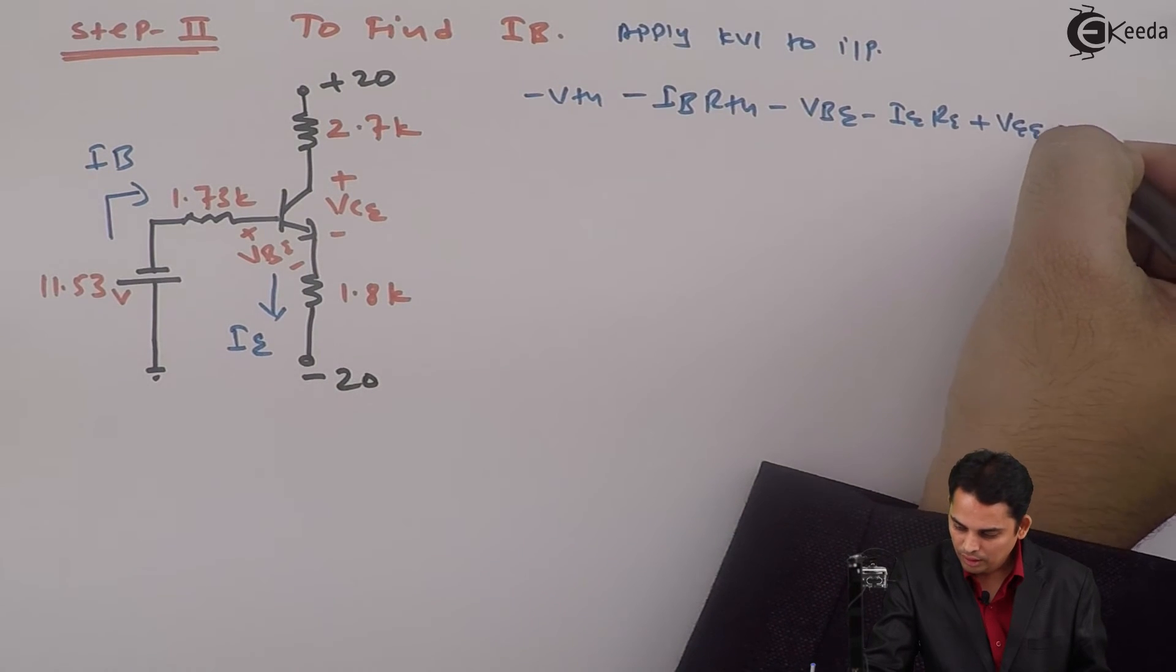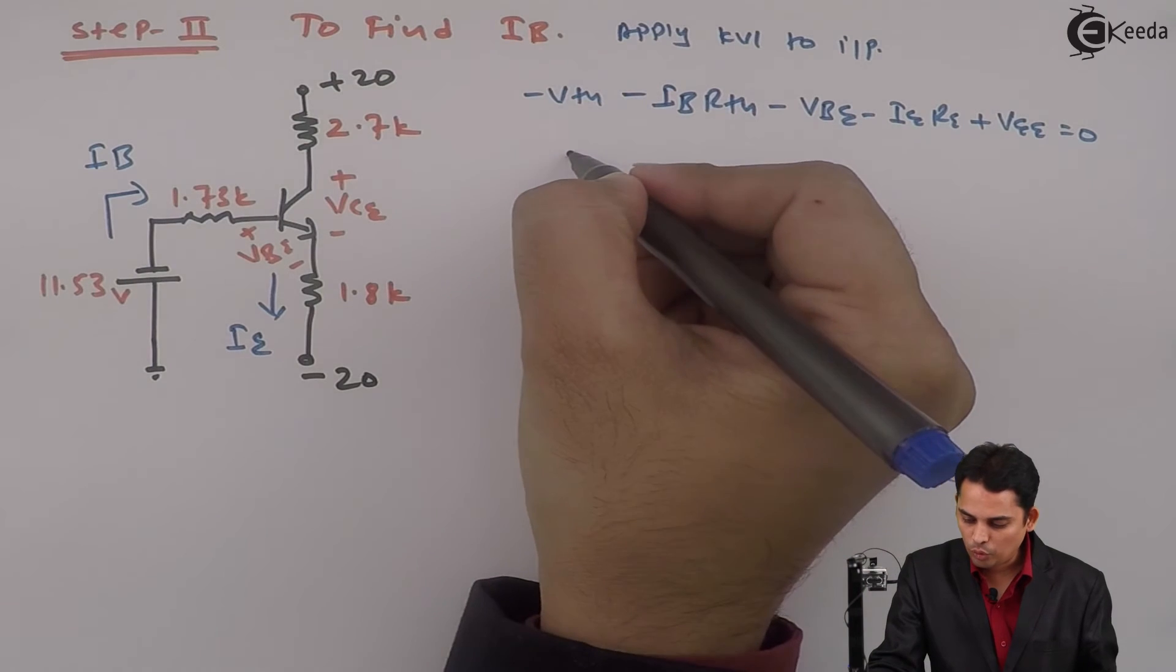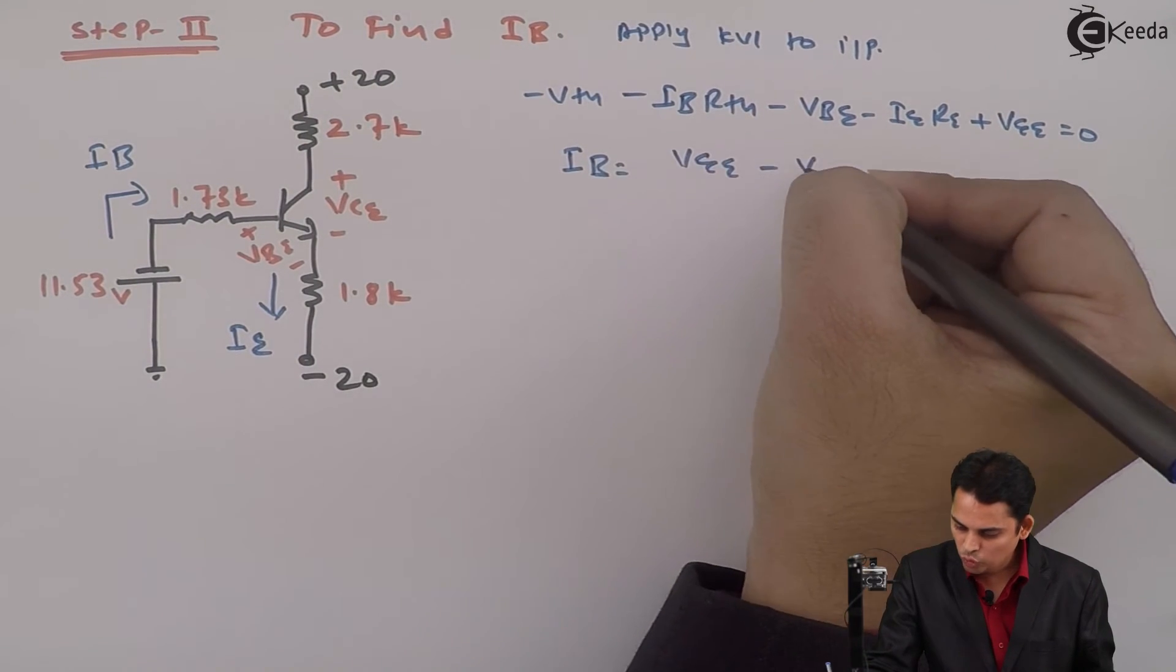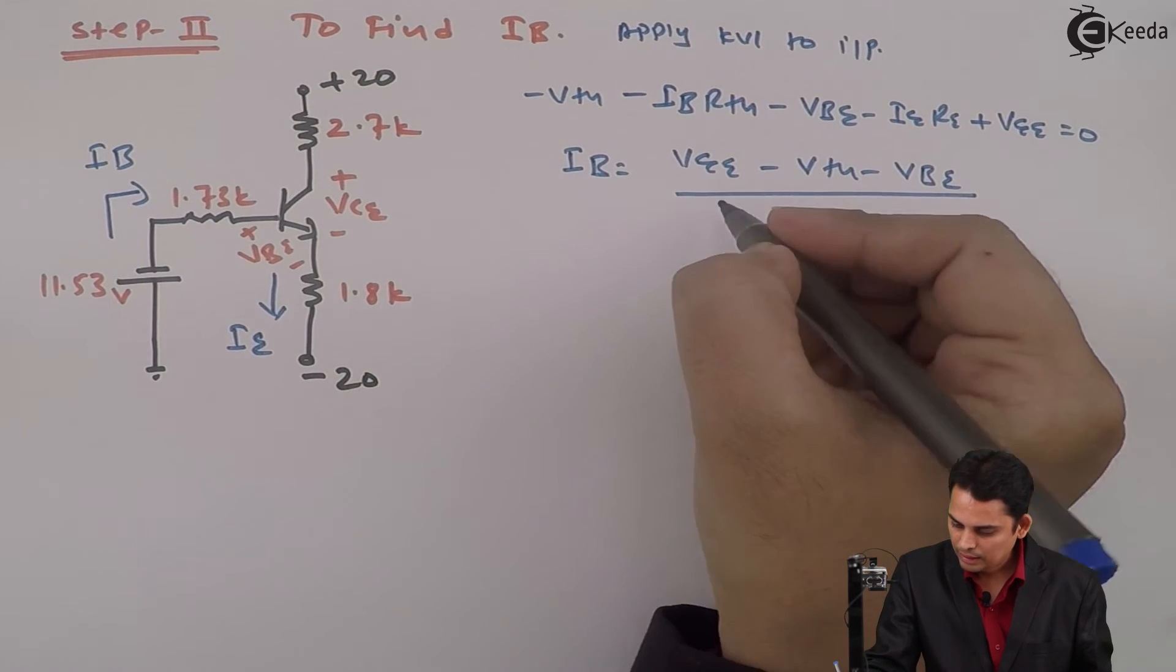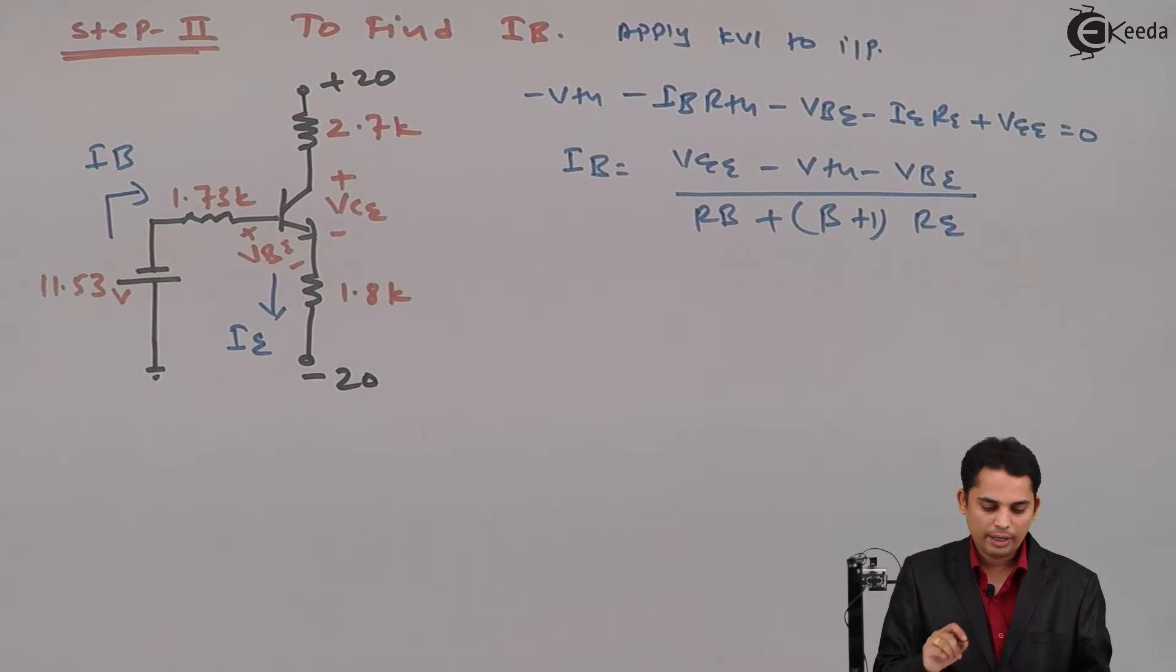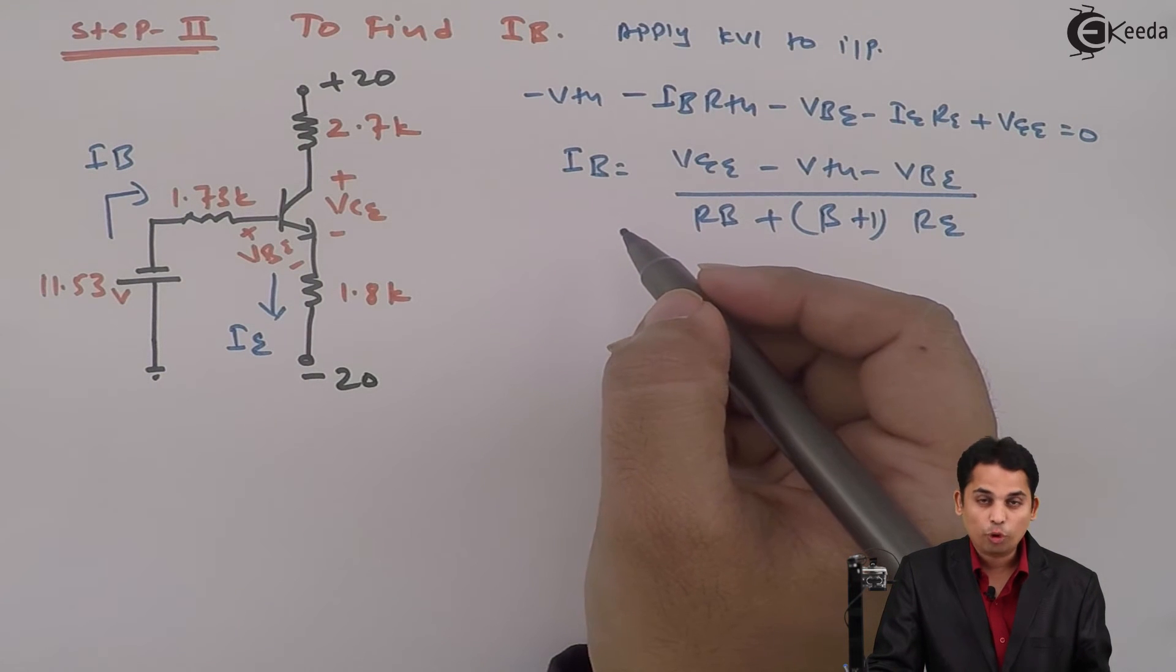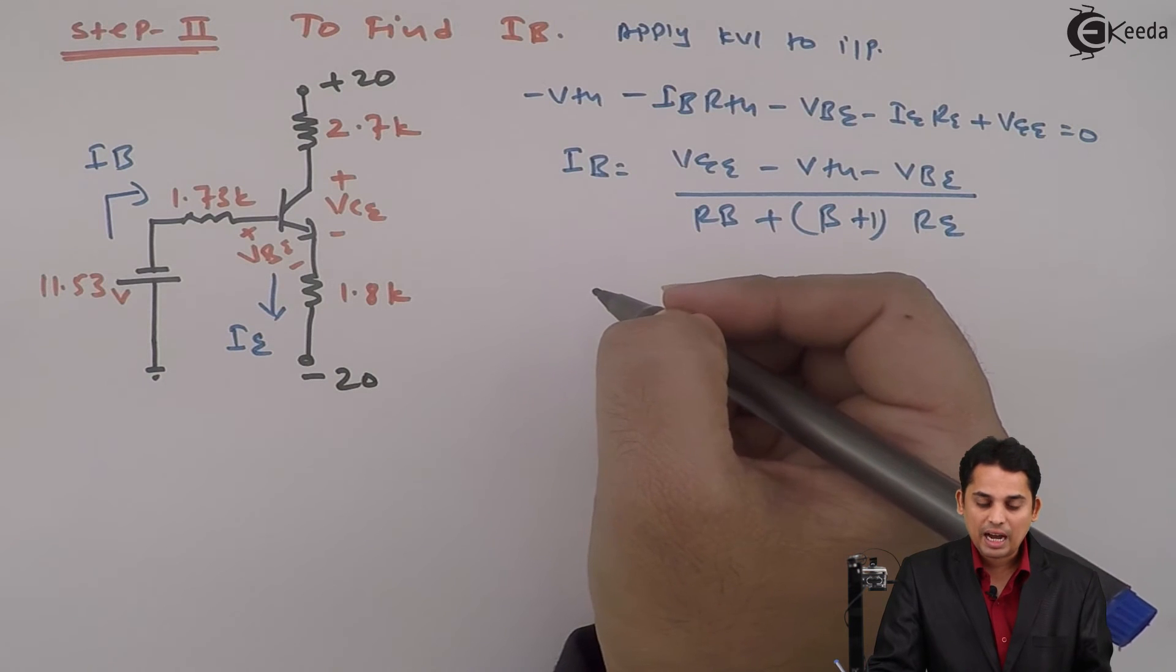The equation simplifies where IB can be calculated using Rb plus beta plus 1 times Re, where Vbe is equal to 0.7 volts and beta is 120. Substitute the values in order to get base current IB.